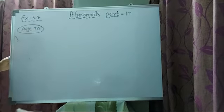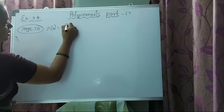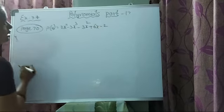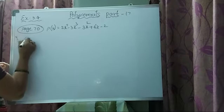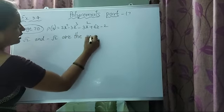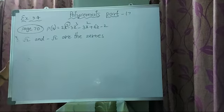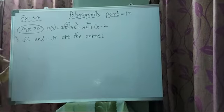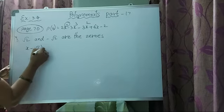P of x is equal to 2x power 4 minus 3x cube minus 3x square plus 6x minus 2. These are the two given zeros. Root 2 is a zero means x minus root 2 is a factor. Minus root 2 is a zero means x plus root 2 is a factor.